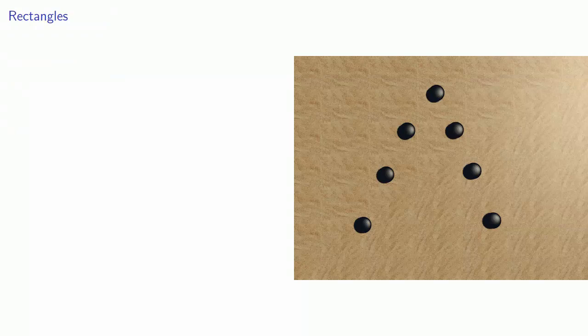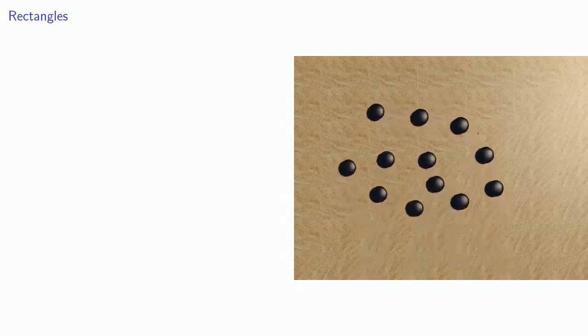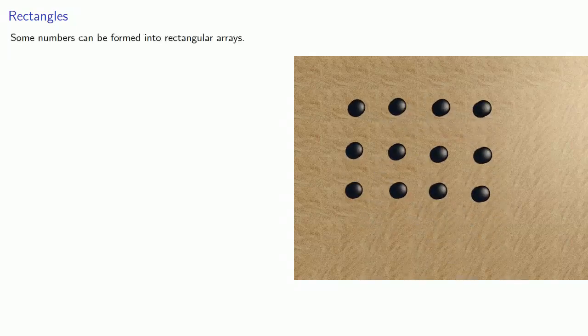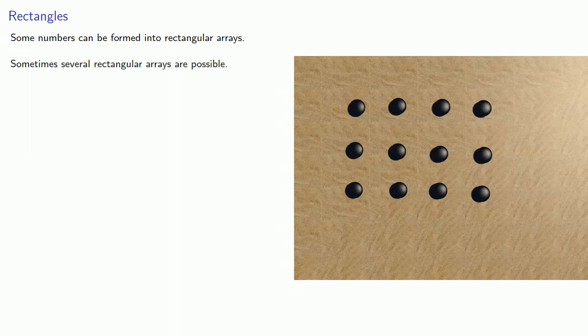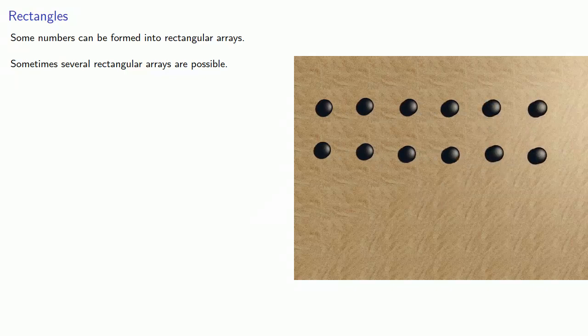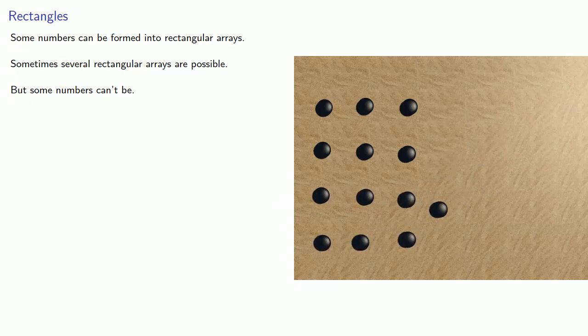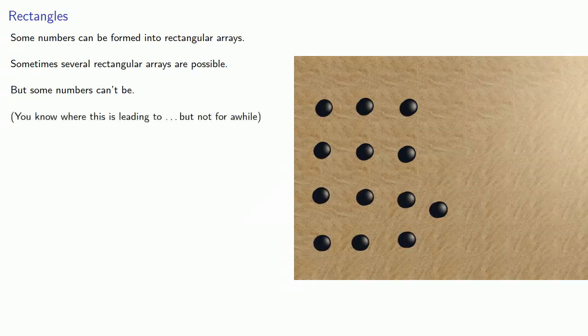So what type of figure do we want to form? A very simple thing to do is we might try to put our number into a rectangular array. Let's make the number larger to make this more interesting. And if we experiment a little, we find out very quickly that some numbers can be formed into rectangular arrays, and sometimes several rectangular arrays are possible. But some numbers can't be put into a rectangular array. And you know where this is leading to, but not for a while. We'll get there when we get there.